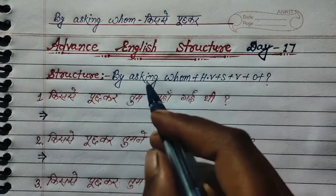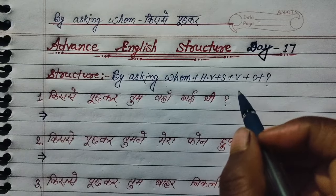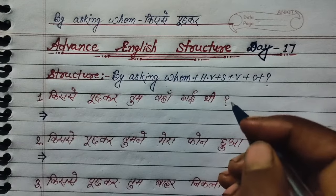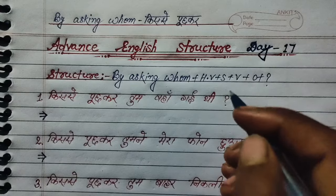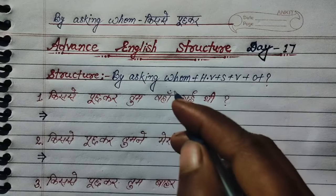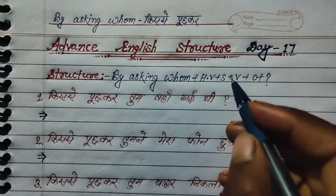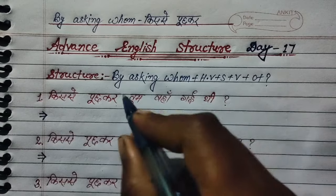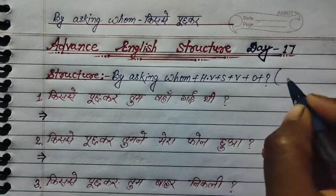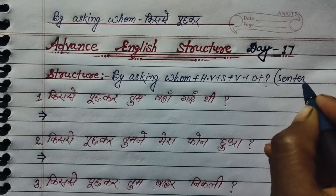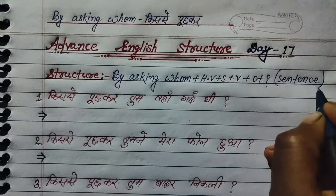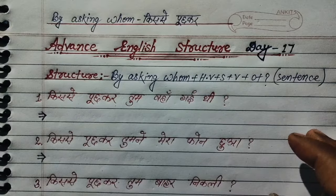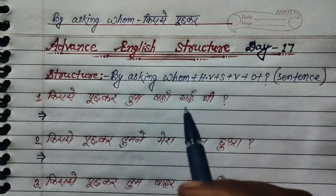You can use any sentence — present tense or past tense — with this structure. By asking whom is the complete phrase you add to any sentence. You can take a complete sentence and use 'by asking whom' with it. If you have any sentence, you can use this structure: first 'by asking whom', then the sentence.